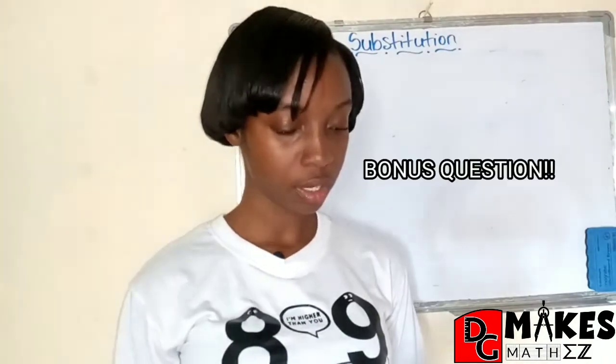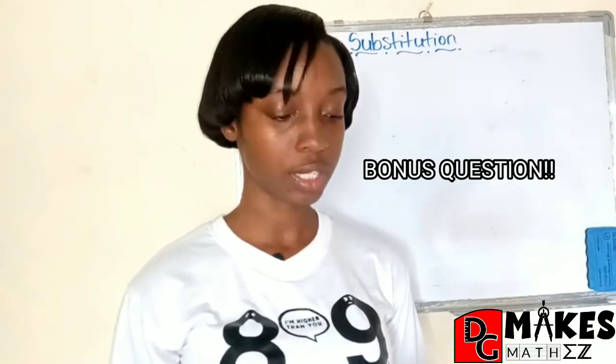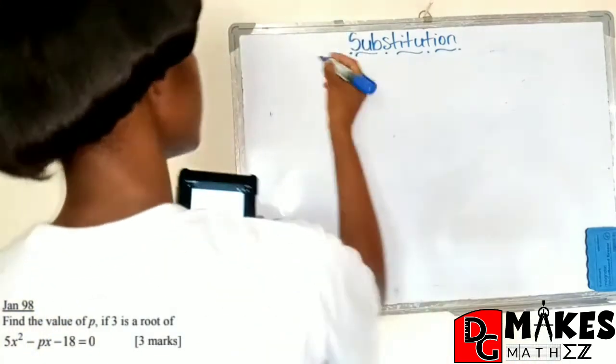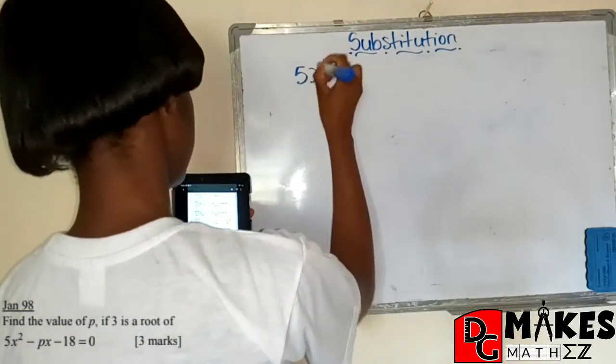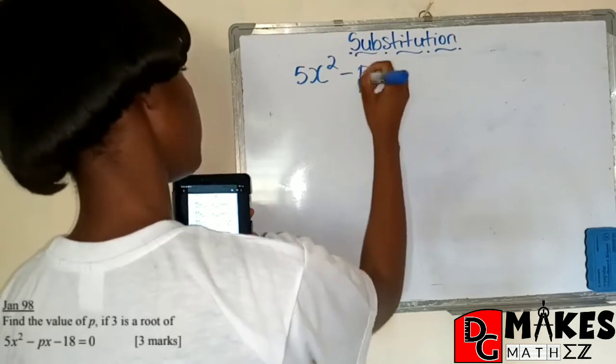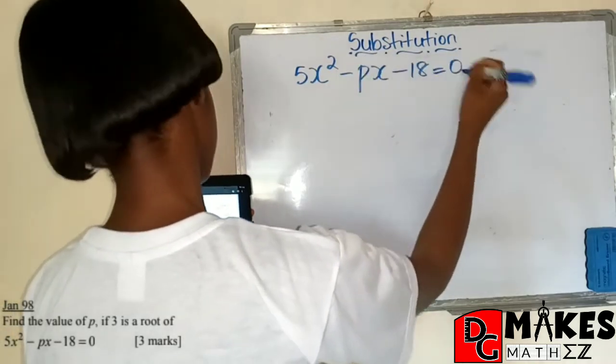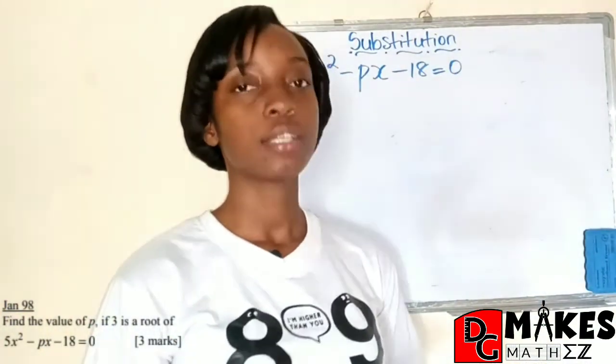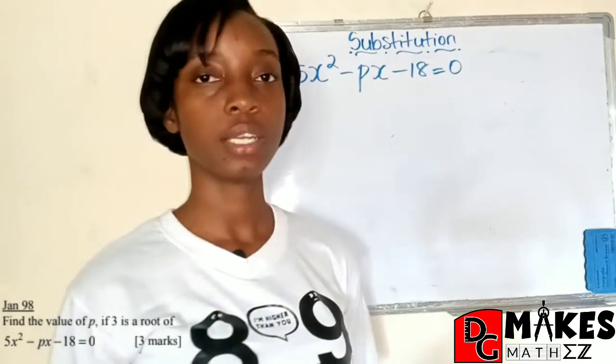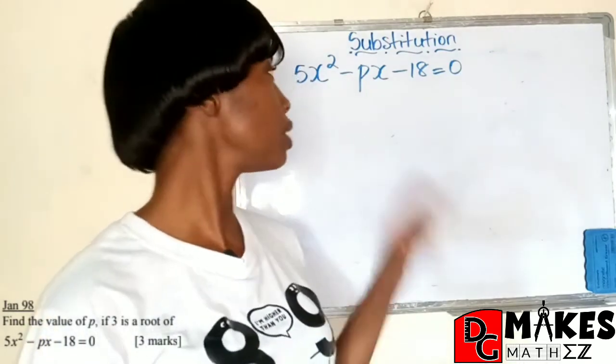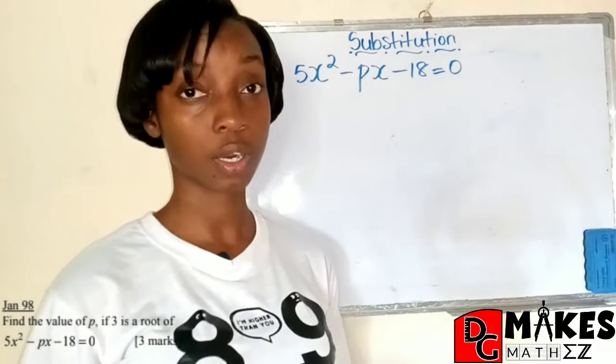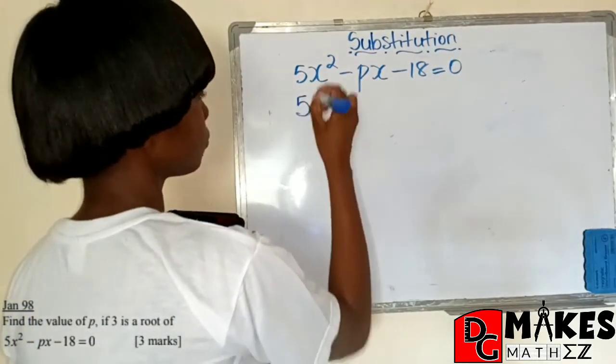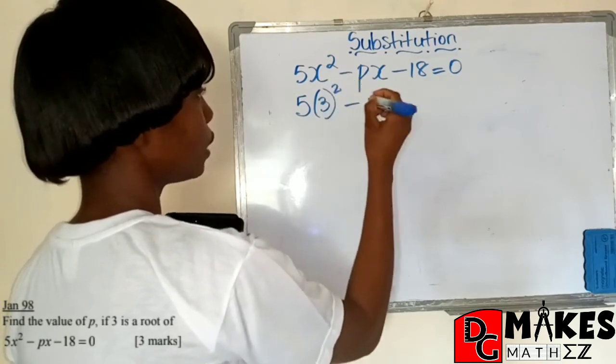Our final question comes in the form of a quadratic equation. It says, find the value of p if 3 is a root of 5x squared minus px minus 18 equals 0. The first thing you need to ask yourself when it says 3 is a root of that equation, what does it mean? It simply means that this equation has two possible x values and 3 is one of them. So we are going to simply substitute 3 as the value of x.